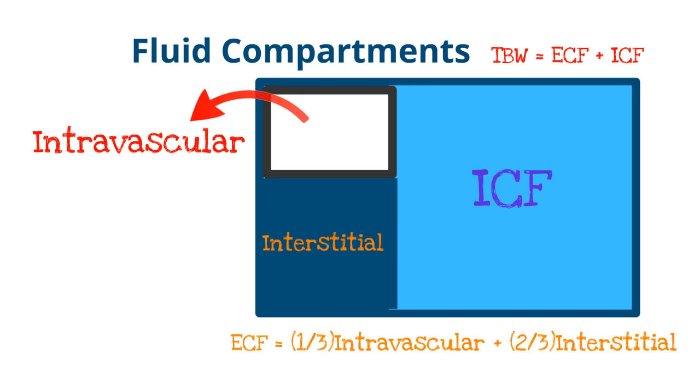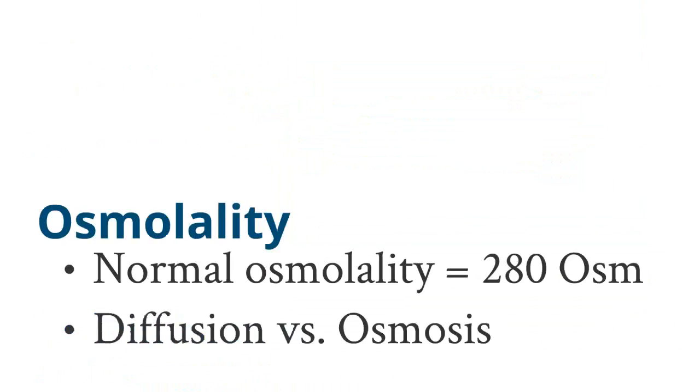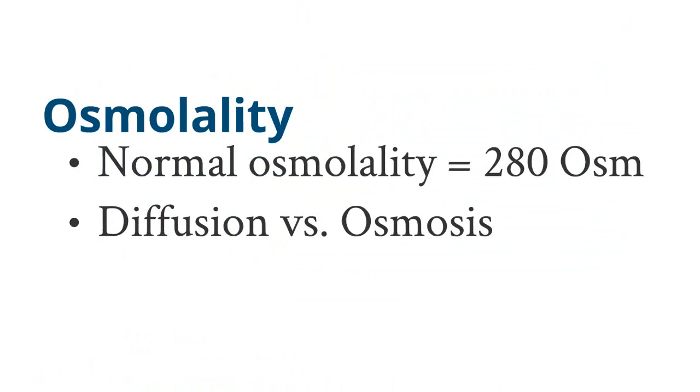Your total body water content equals your extracellular fluid plus your intracellular fluid, while the extracellular fluid, so that fluid outside of the cells, consists of one-third of your intravascular space plus two-thirds of your interstitial space. The interstitial volume is the amount of fluid that is in the tissues, but not within the cells. Not only are fluid compartments of the body important to understanding IV fluids, but also the content of these fluids as well.